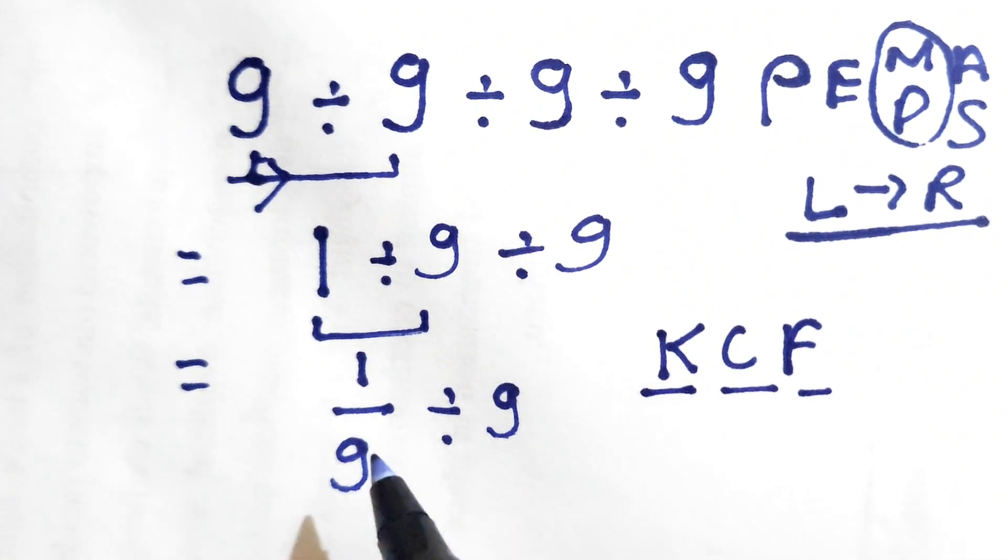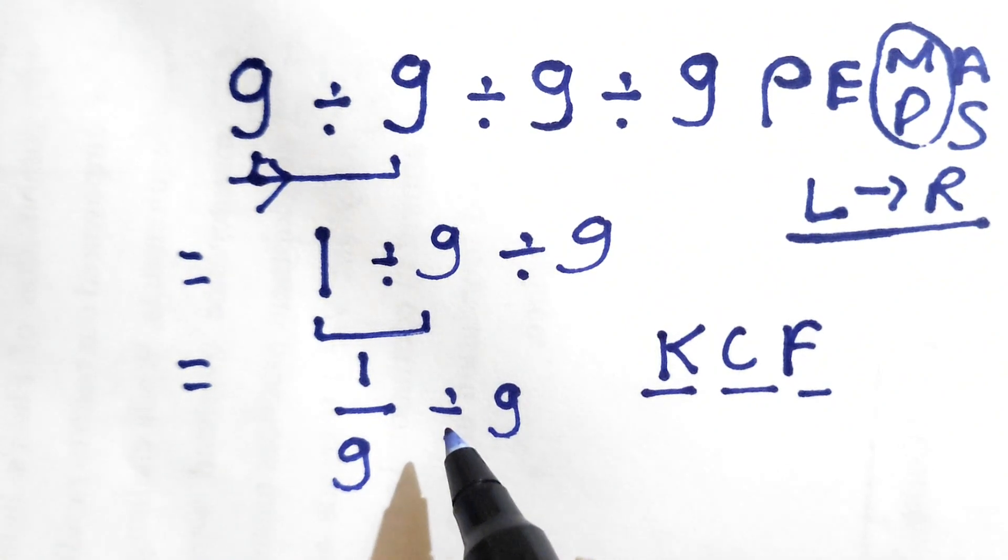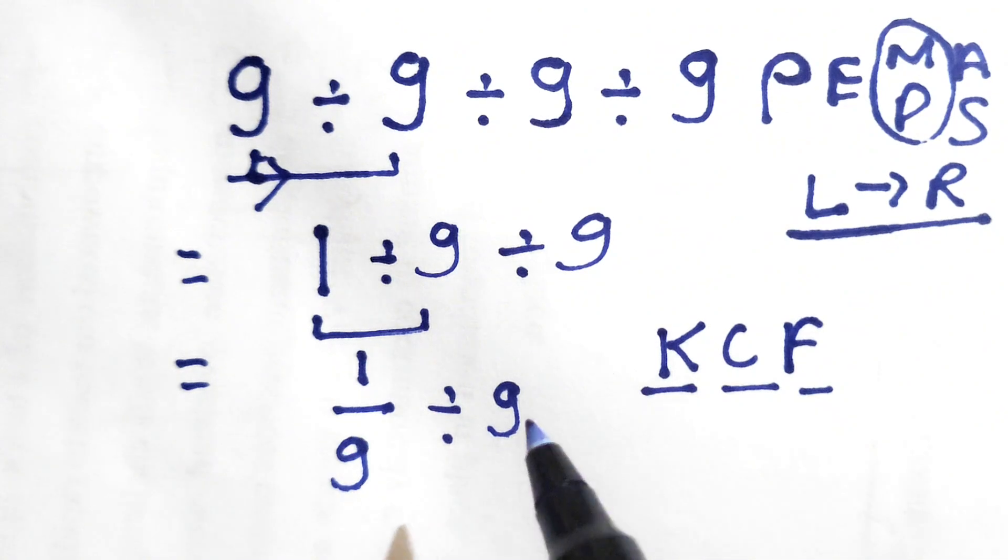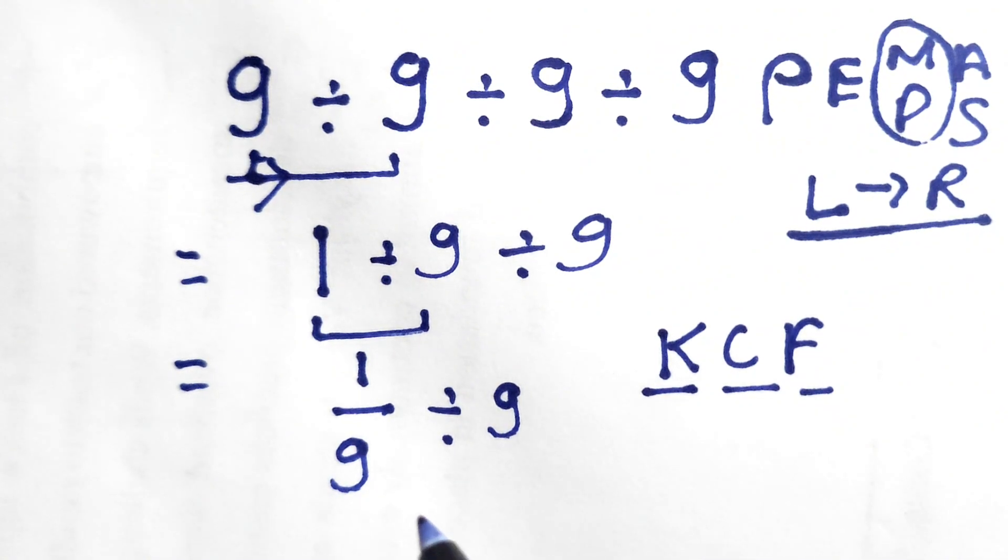It means we need to keep this 1 over 9 as it is, change the division sign into multiplication, and flip this 9. So let's see how we can solve this.